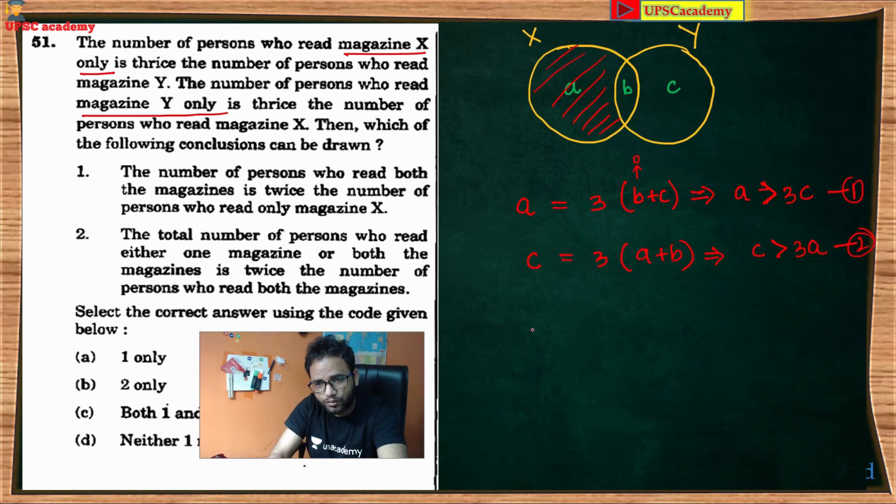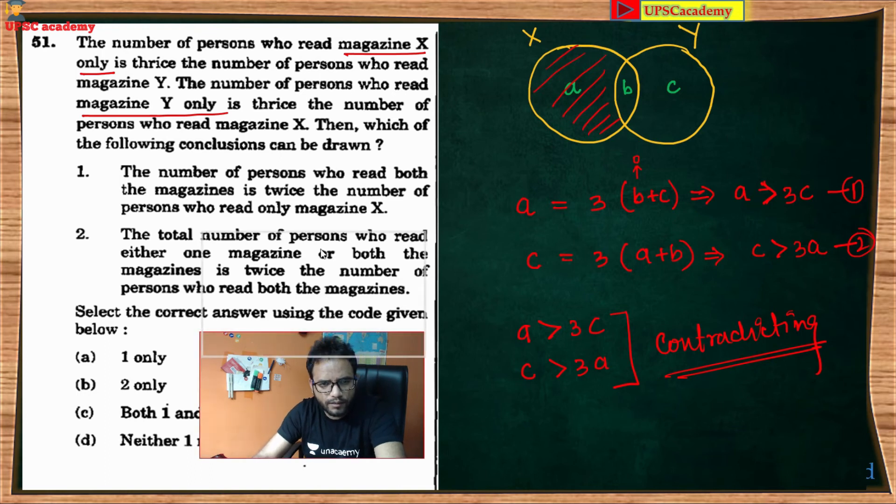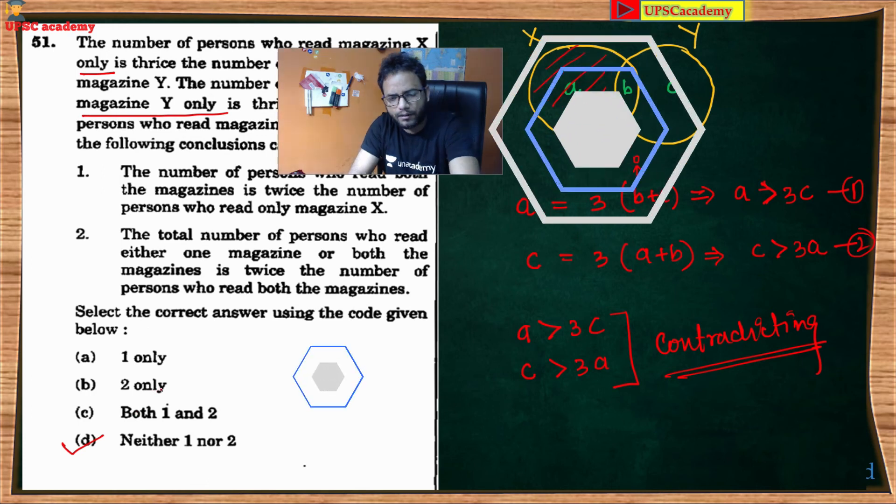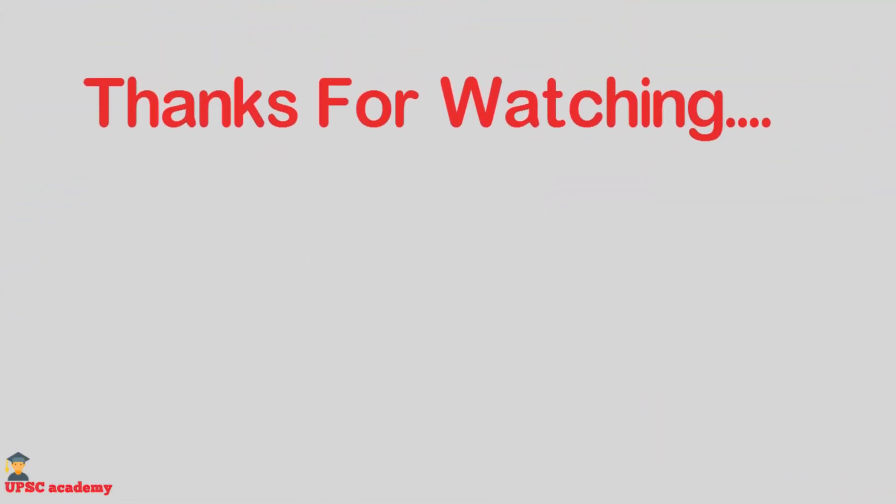Yaha se agar statement one and two ko dhyaan se dekhe to ye dono statements contradicting hai. Contradicting option ho jayenge to neither. Correct answer one aur hamare dono hi conclusions hai, dono conclusions kya hai yaha par galat hai.